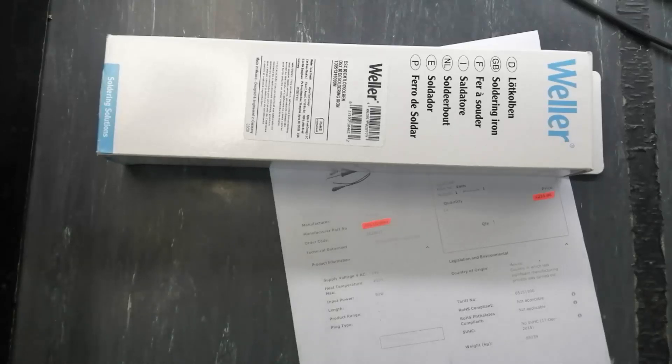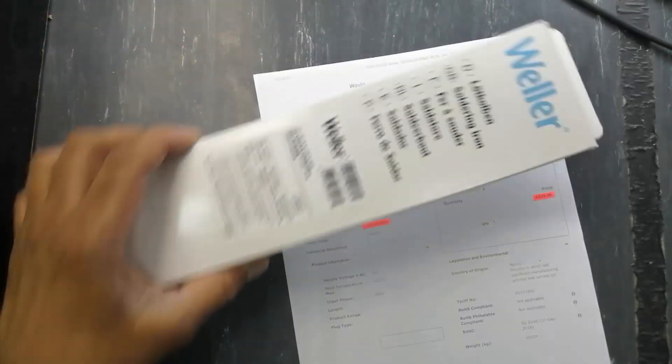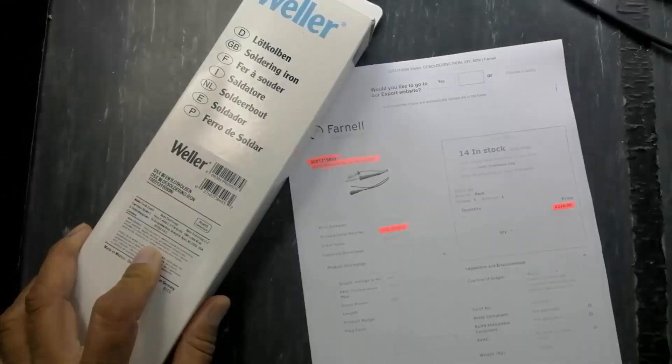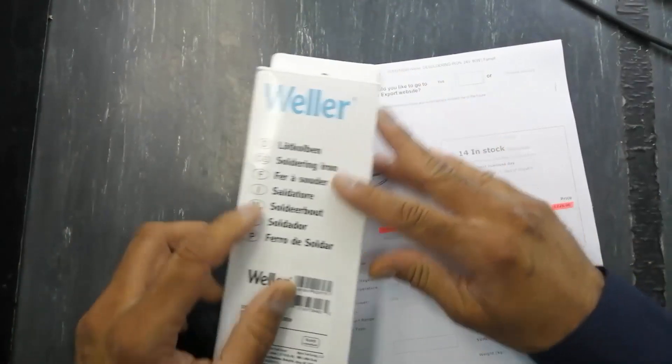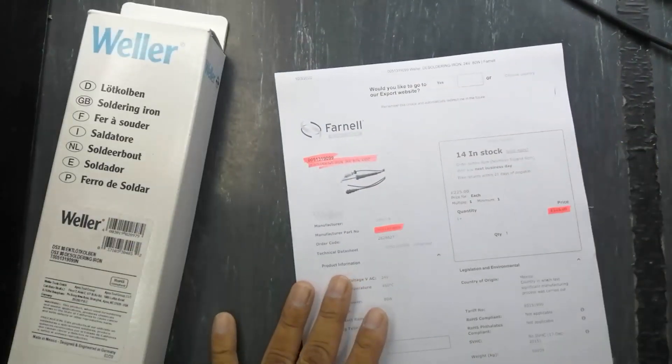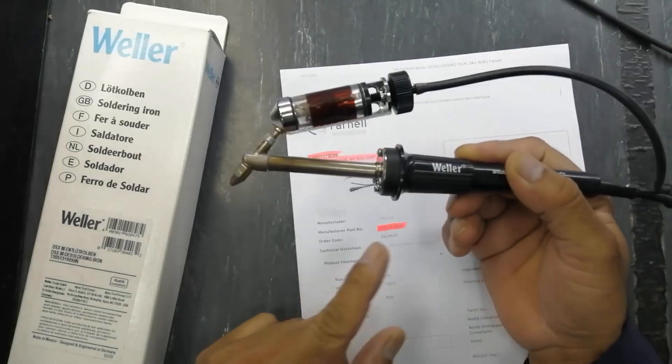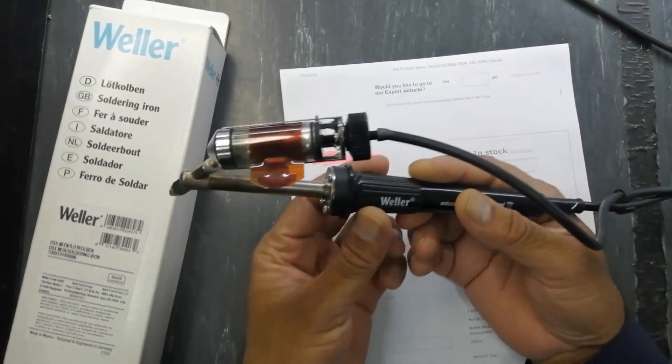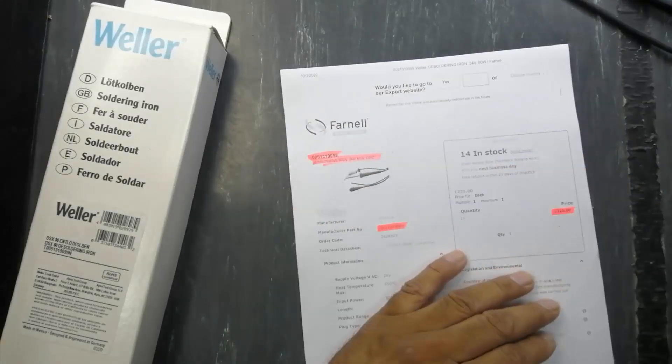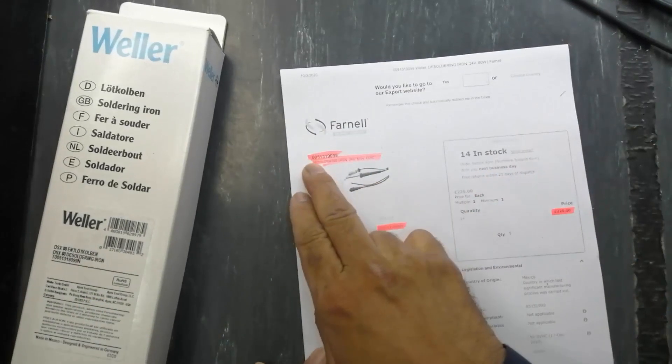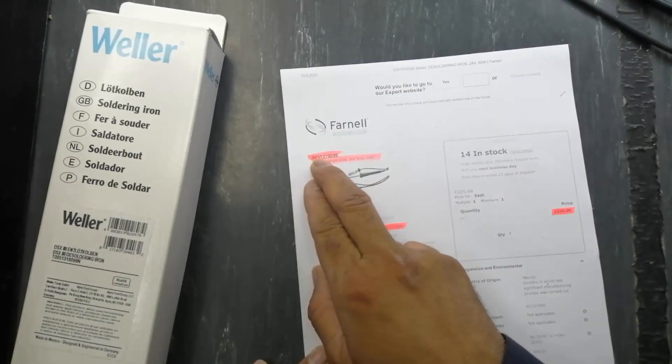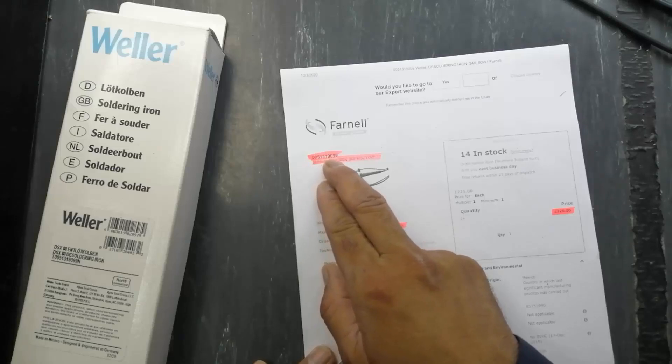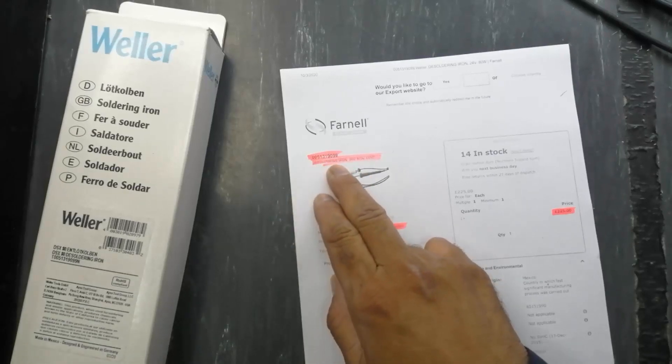Assalamu alaikum warahmatullahi wabarakatuhu friends, welcome to Hashim Electronics. Today I'm sharing my shopping experience for a Weller desoldering gun because my previous desoldering gun malfunctioned. I purchased it from Farnell under order code 0051319099. It is a desoldering iron.